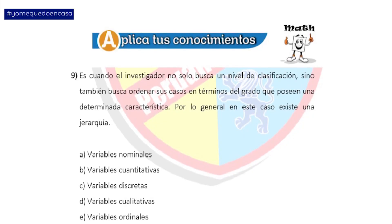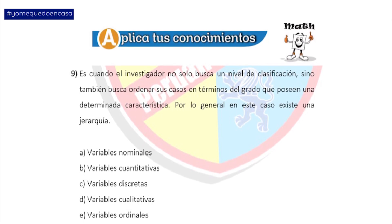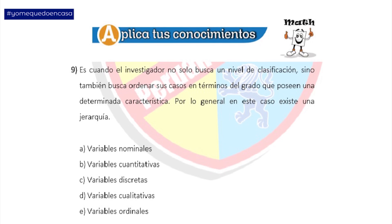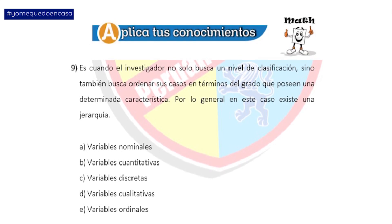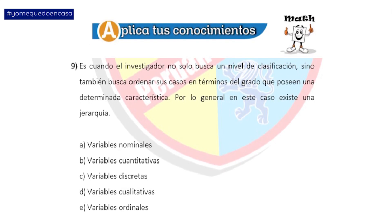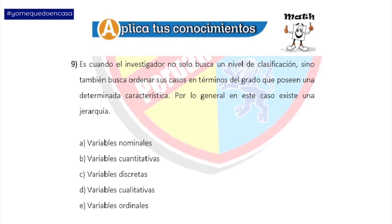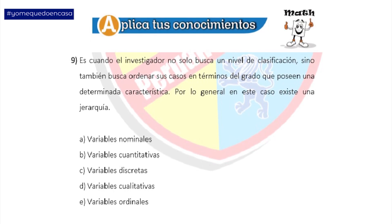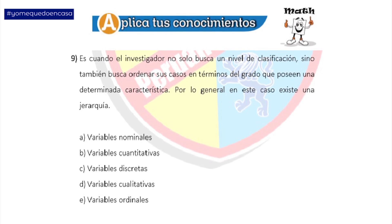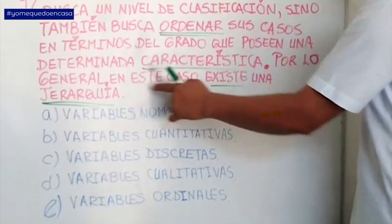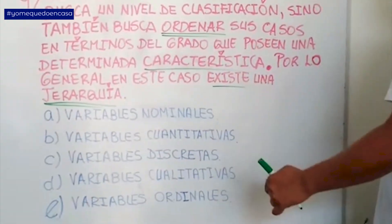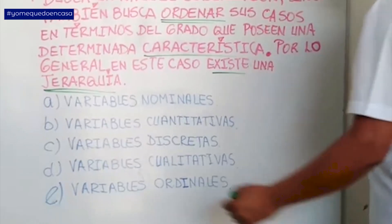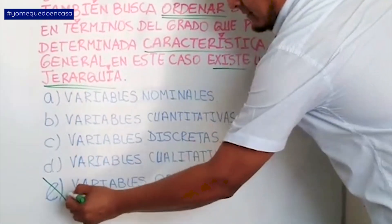En la pregunta número 9, es cuando el investigador no solo busca un nivel de clasificación, sino también busca ordenar sus casos en términos del grado que poseen una determinada característica. Pero además, por lo general, existe una jerarquía. Me habla de orden y también de una jerarquía, por lo tanto, ¿cuál de estas alternativas cumple esas condiciones? La alternativa correcta debería ser la alternativa D.